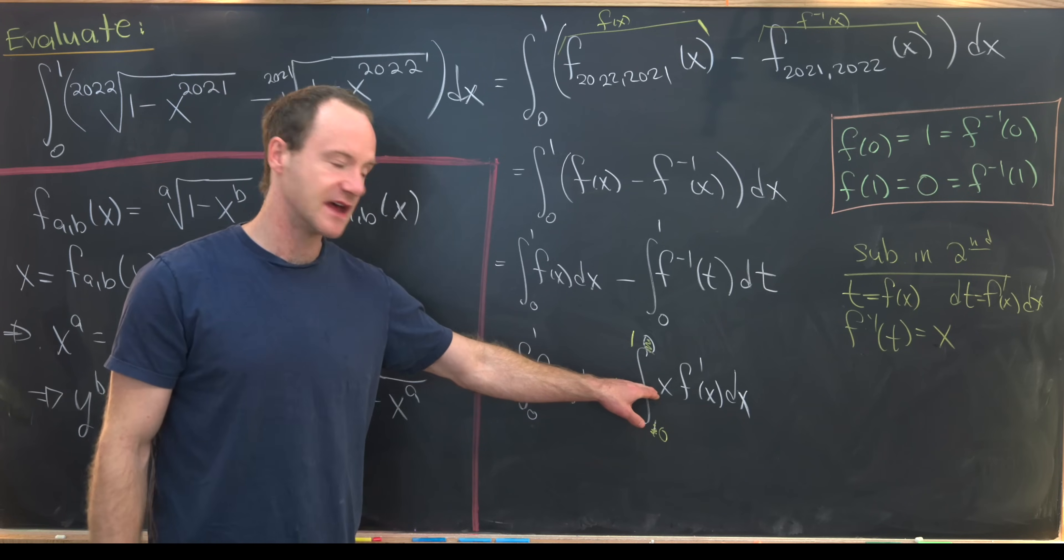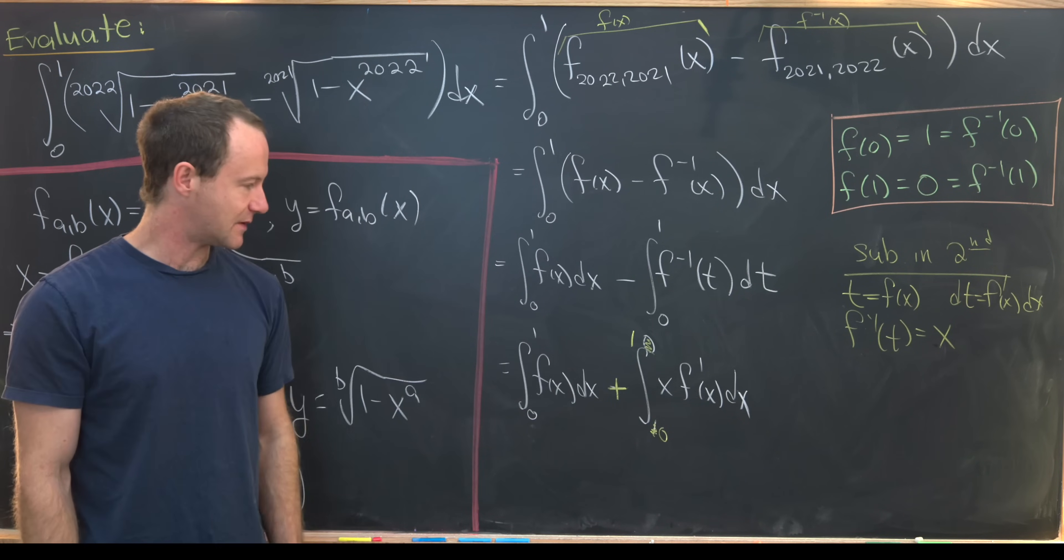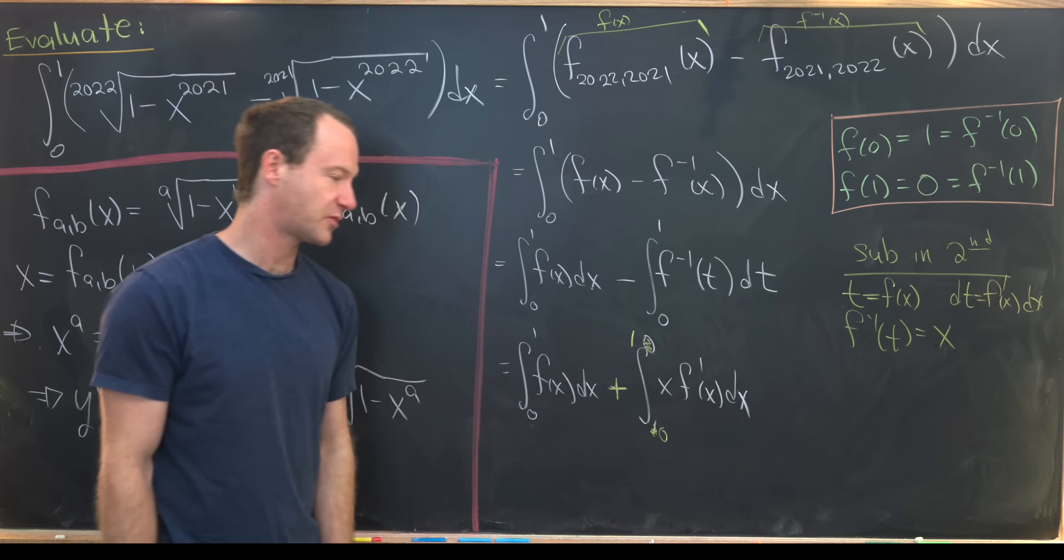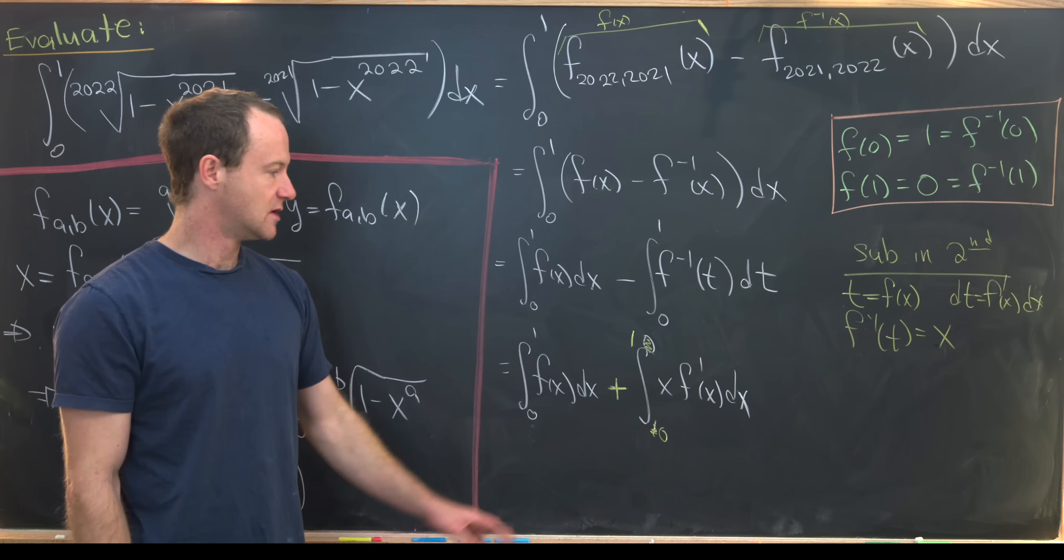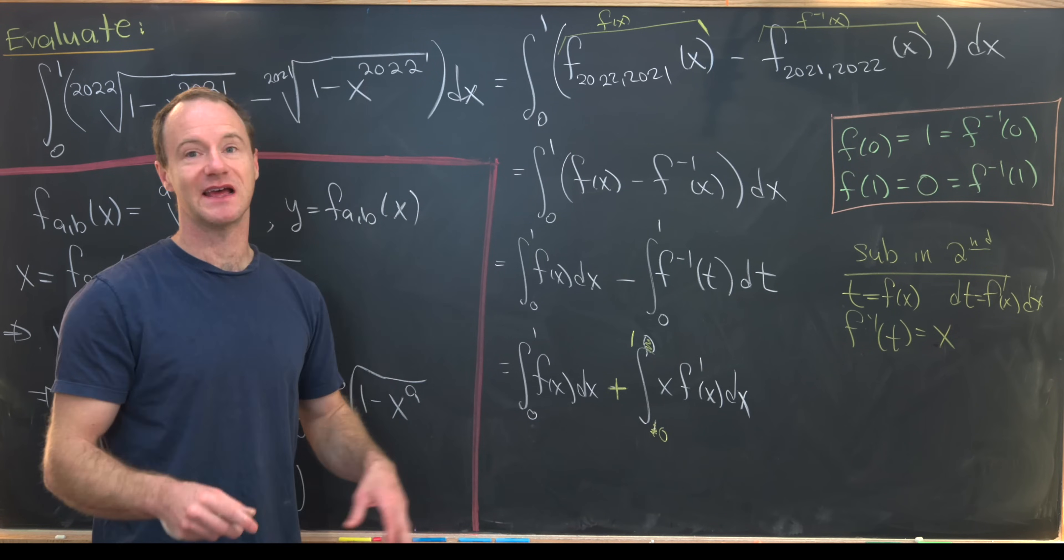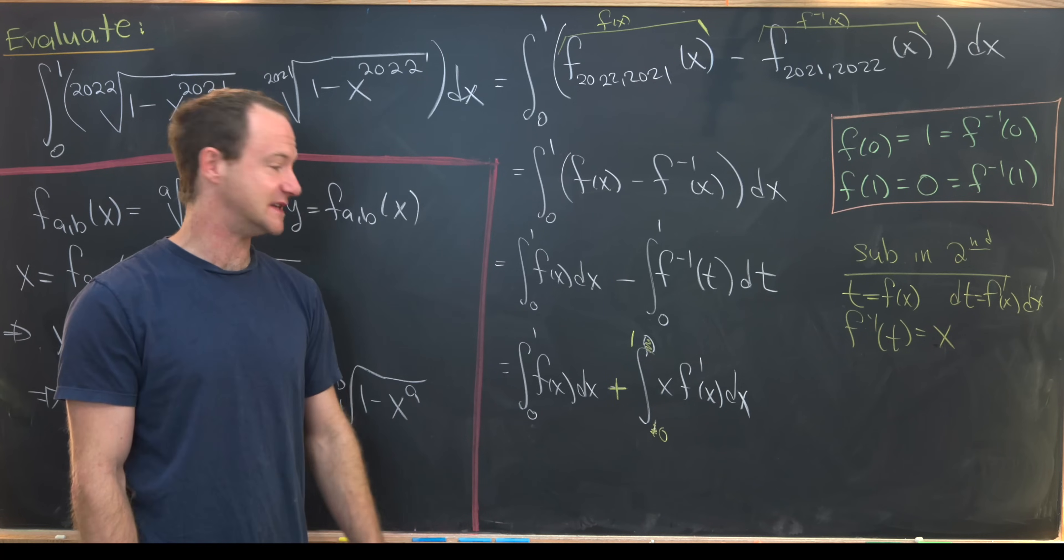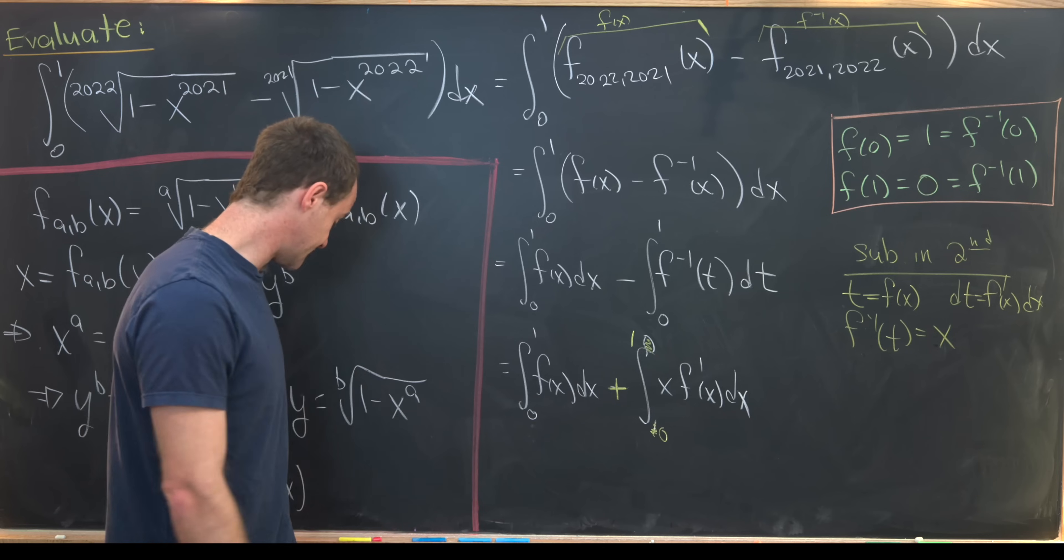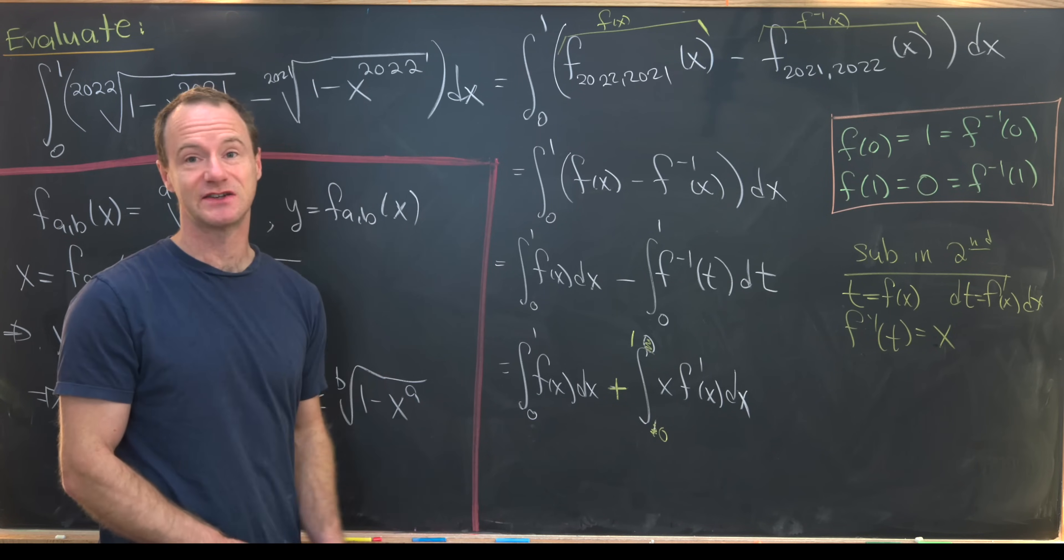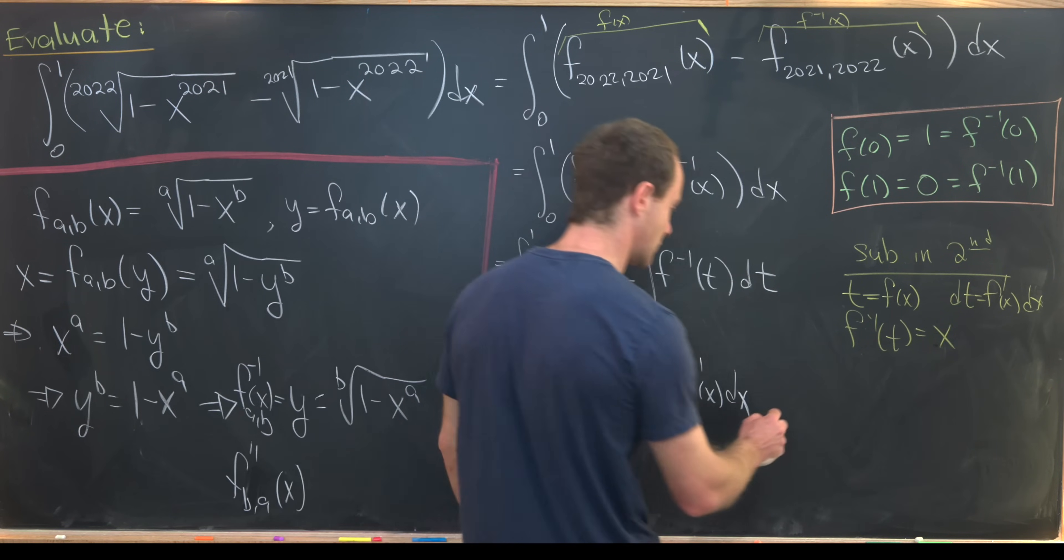Now looking at this, I've got an integral made up of two parts, x and then f prime dx. But that's one thing that has an easy derivative, x, and one thing that has an easy antiderivative, f prime. So that really screams out that maybe we should use integration by parts at this step.